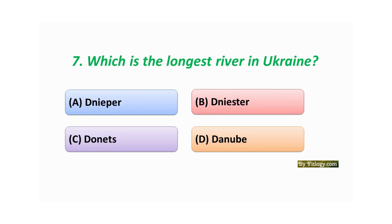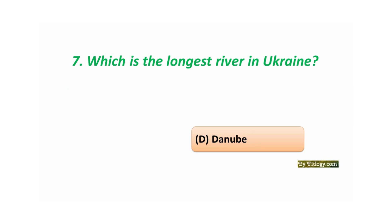Question number seven: Which is the longest river in Ukraine? Option A: Dnipro. Option B: Dniester. Option C: Donets. Option D: Danube. The correct answer is Option D: Danube.